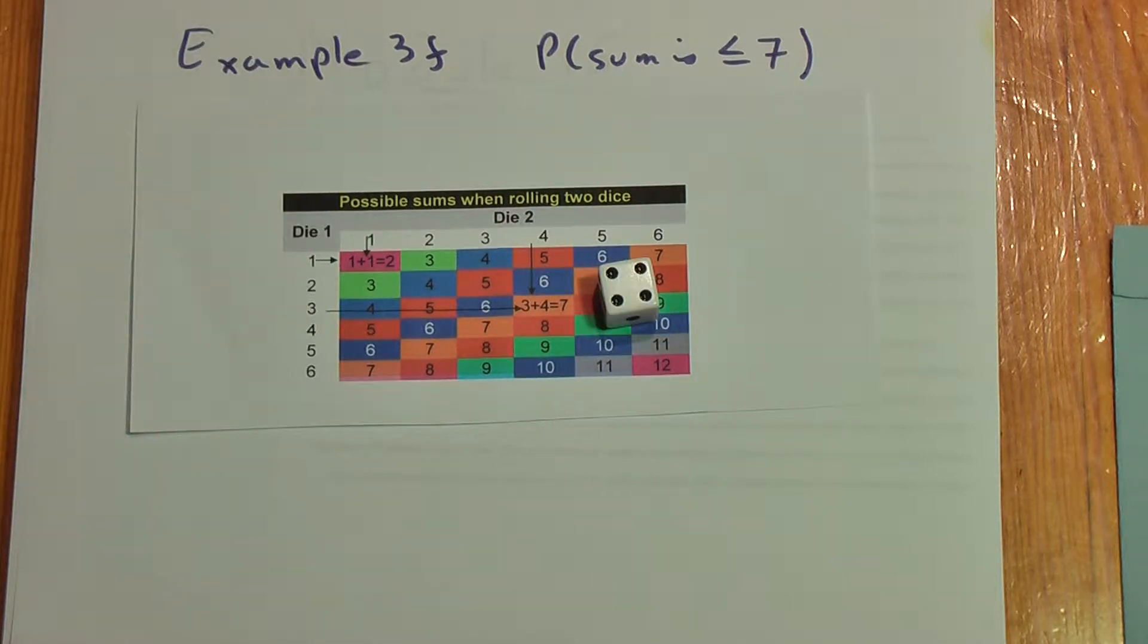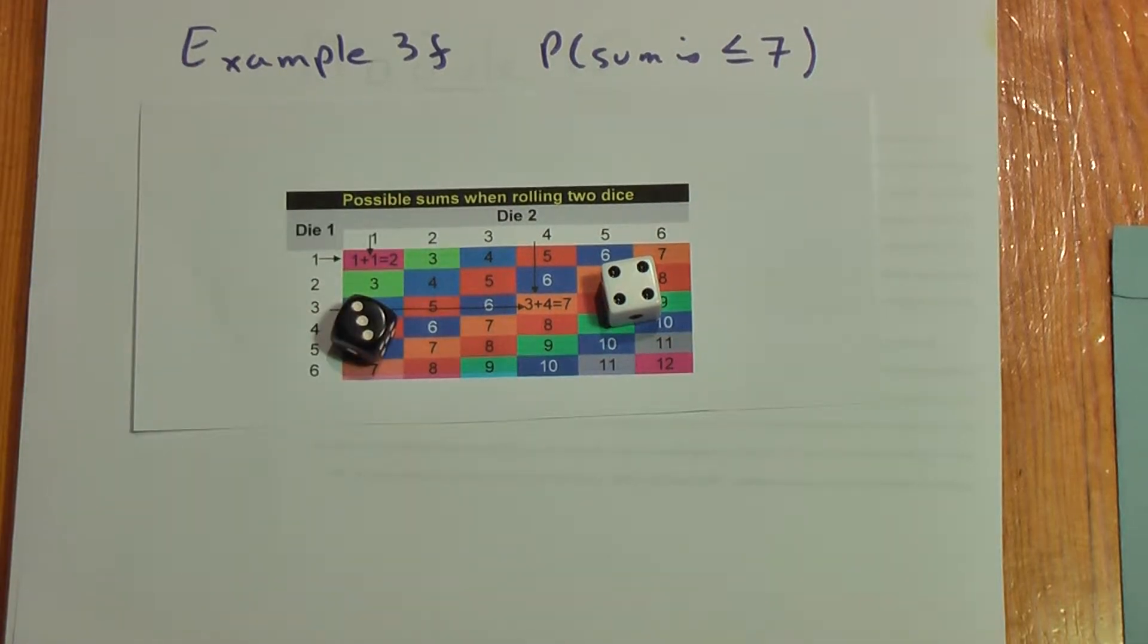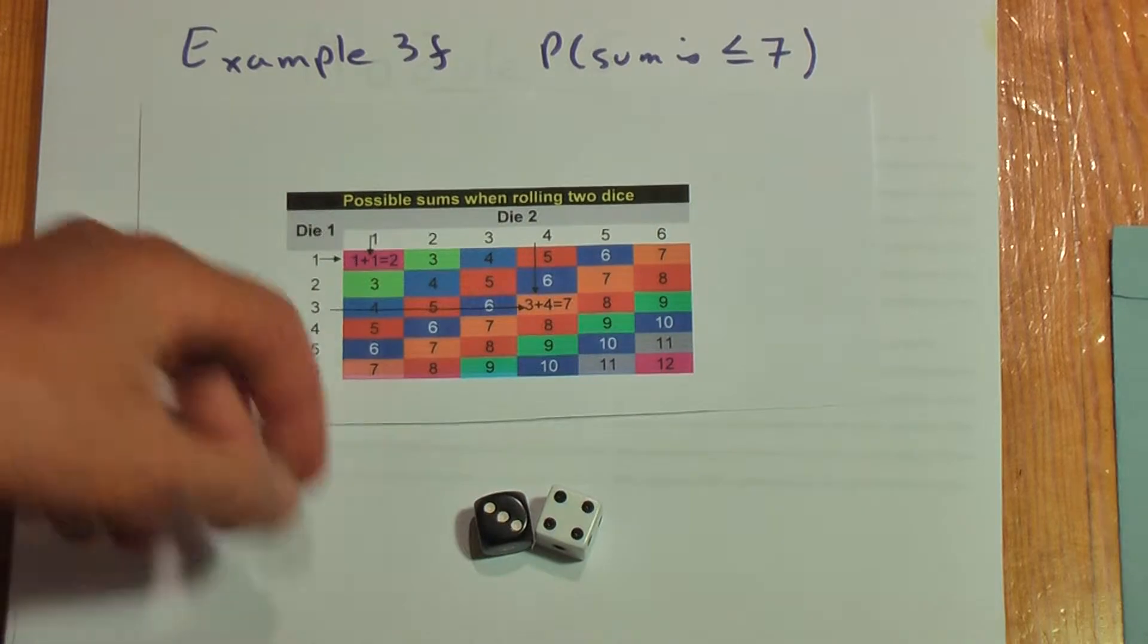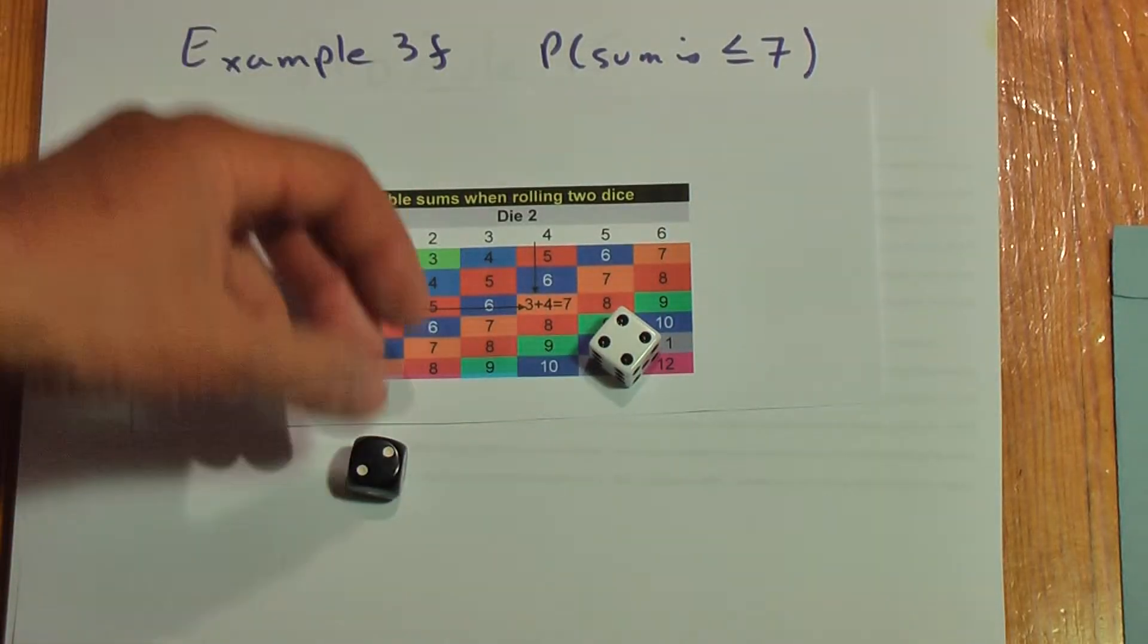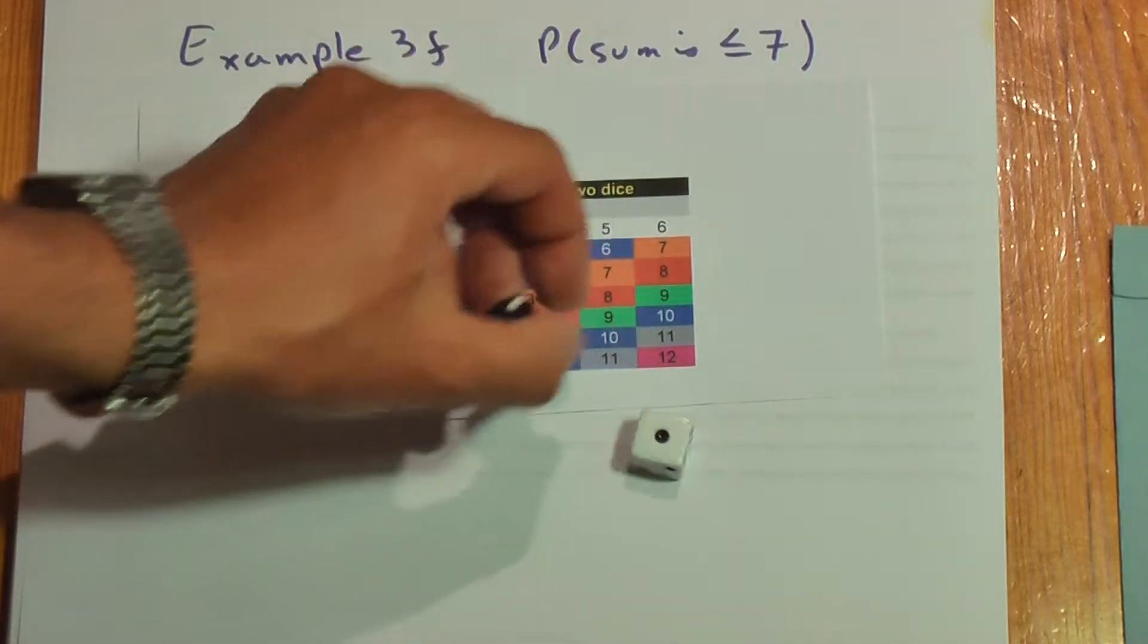So we're going to include 7 as a possibility. Here we have a 7: 4 and 3 is 7. 4 and 2 is less than or equal to 7, so that's in.